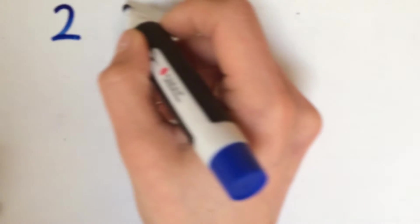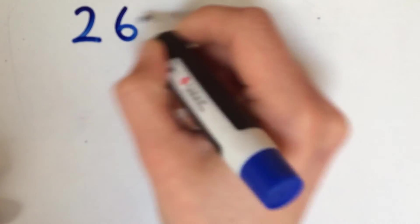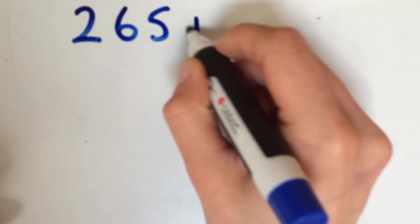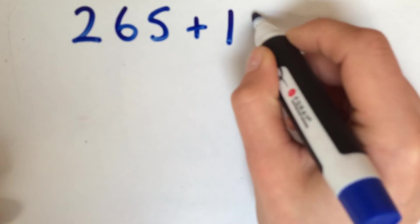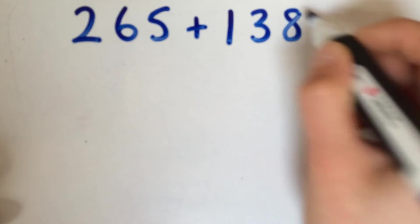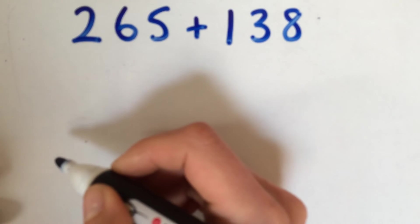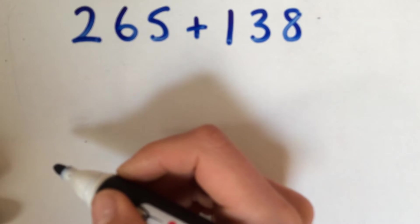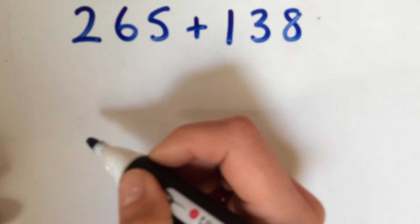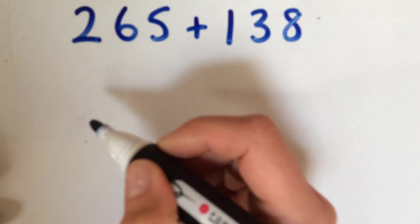So if we have, for example, 265 add 138, we could use knowledge of place value to break up the numbers into hundreds, tens, and units before adding them back together.